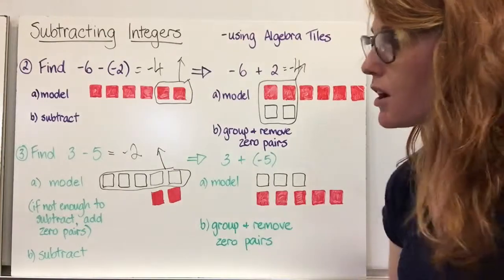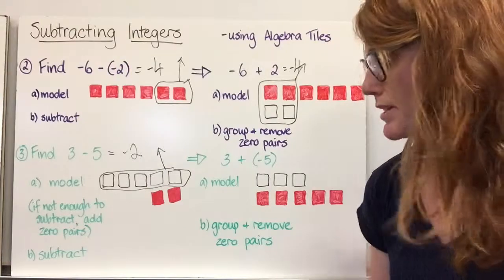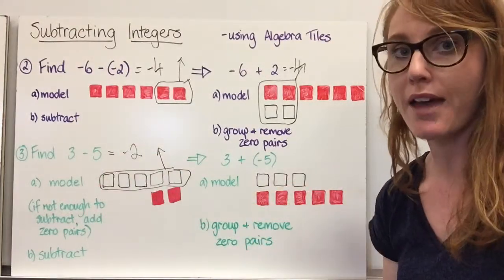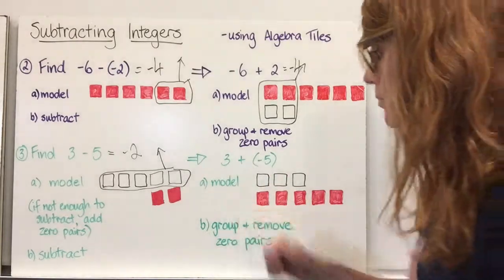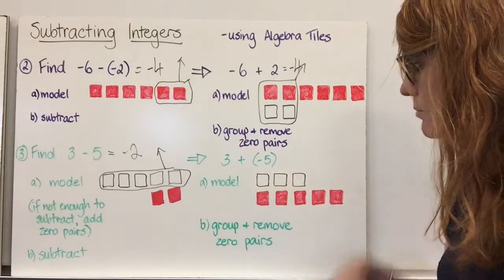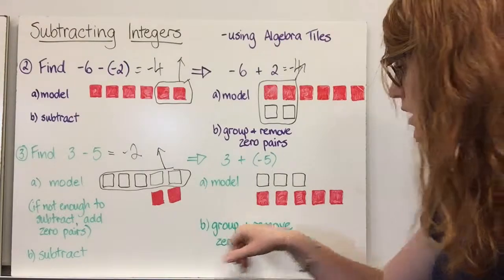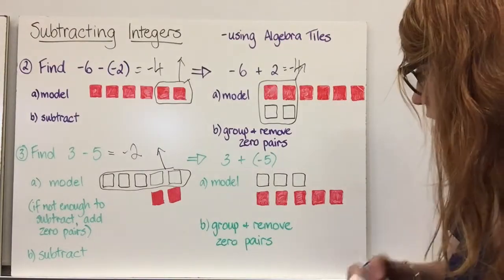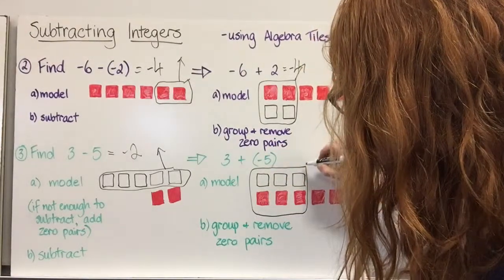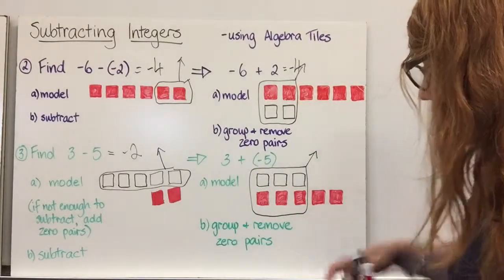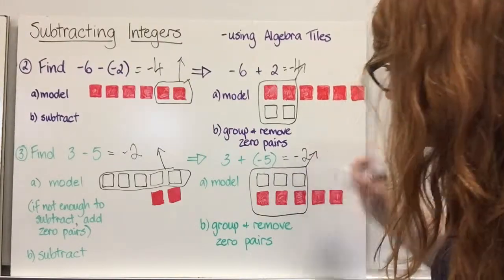Similarly, when subtracting an integer, we can find the same answer by adding its opposite. So instead of subtracting five, we add the opposite of five, which is negative five. Now we have three plus negative five. We model three positives and add negative five — one, two, three, four, five. We group and remove zero pairs — in this case, three zero pairs — and we are left with negative two. So three plus negative five is negative two.